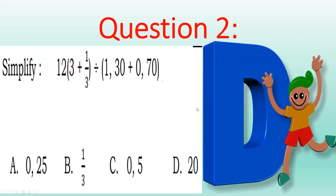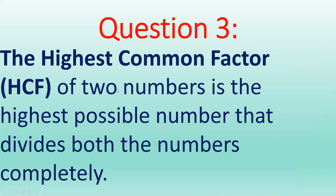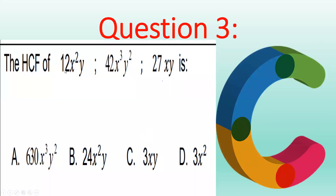Question three: find the HCF of these three expressions with x and y. What is HCF? The Highest Common Factor of two or more numbers is the highest number that divides all of them completely. We are looking for which option can divide all three. For the variable powers — for example, x², x³, x¹ — we use the smallest power. The smallest power of x here is x¹.